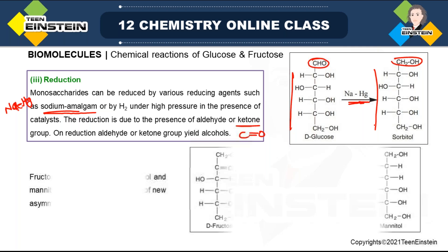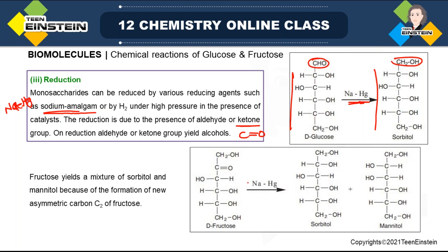In the case of fructose, the difference from D-glucose is only in the first two carbons. Focus on the first carbon of glucose and fructose to understand the difference. In fructose, there is C=O, not CHO, so reduction gives a mixture of two different products. One is known as sorbitol and the other is known as mannitol. We did not get two products from glucose — only sorbitol — but from fructose we also get mannitol, an isomer of sorbitol.